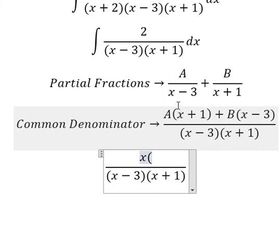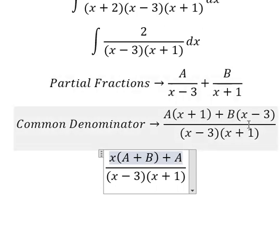So about x, we have A and B. About the numbers, we have 1 with A, negative number 3 with B.